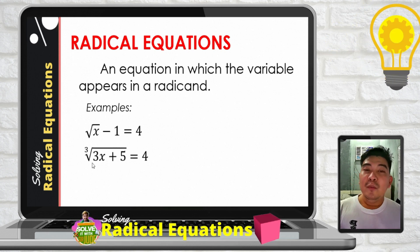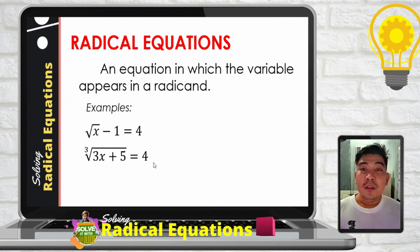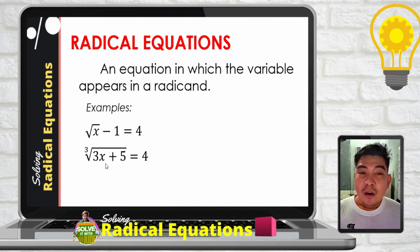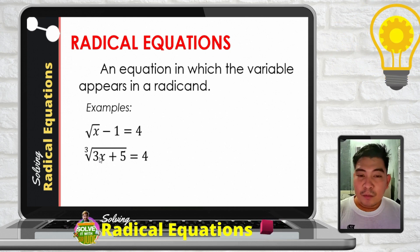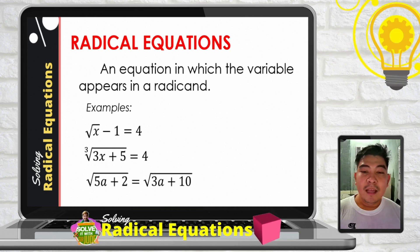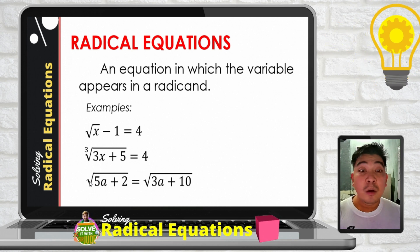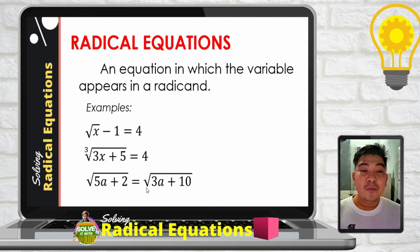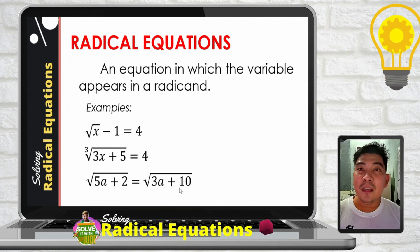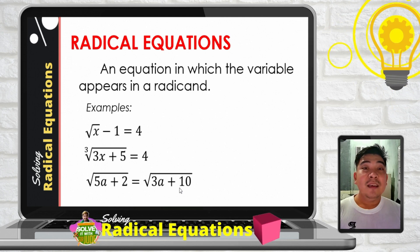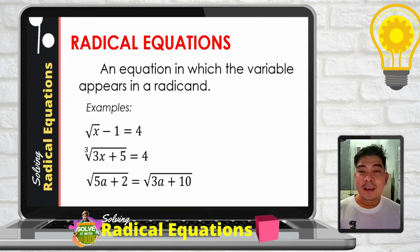Another example is the cube root of the binomial 3x plus 5 is equal to 4. Similarly, we have a variable inside the radicand. The last example is the square root of the binomial 5a plus 2 is equal to the square root of the binomial 3a plus 10, where a variable appears inside the radicand.